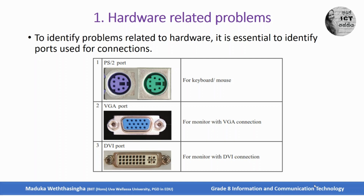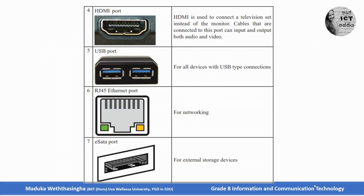Then VGA — Video Graphic Adapter port — the monitor with VGA connection. We use this VGA port to connect your monitor. Then DVI port — DVI port is also used for connecting the monitor. Then HDMI port — HDMI is used to connect a television set instead of the monitor.